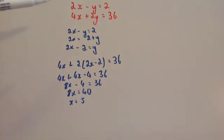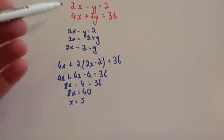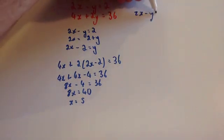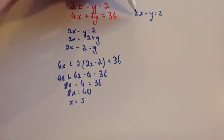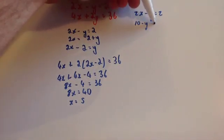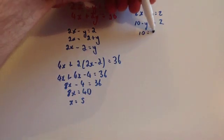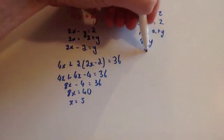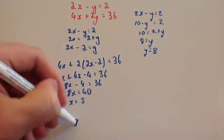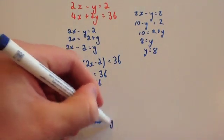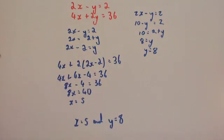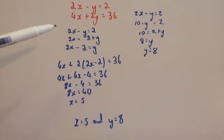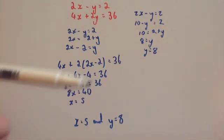Now we substitute x equals 5 into either equation to find y. Using the top one: 2x minus y equals 2, so 2 times 5 is 10, giving 10 minus y equals 2. Adding y to both sides: 10 equals 2 plus y, and taking away 2 gives y equals 8. So x equals 5 and y equals 8. We solved these simultaneous equations by substituting y equals 2x minus 2 from the top equation into the second, expanding, solving, and back-substituting.